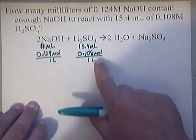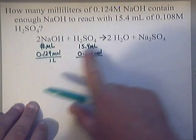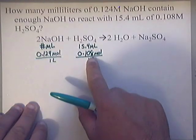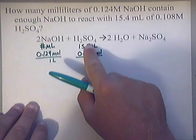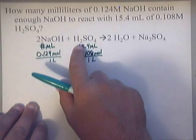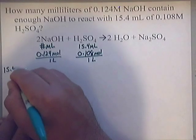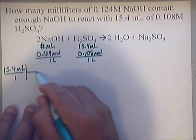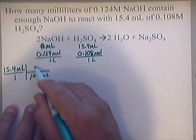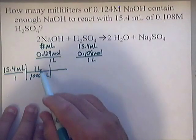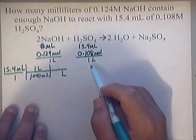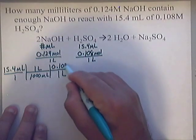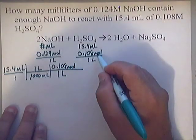I will always start with the volume. This side has the unknown, so I'll start with the known side — 15.4 milliliters of H₂SO₄. First, convert that to liters: 15.4 mL over 1, times 1 liter over 1,000 milliliters. Now I need to use the molarity of H₂SO₄: in 1 liter there are 0.108 moles of H₂SO₄.